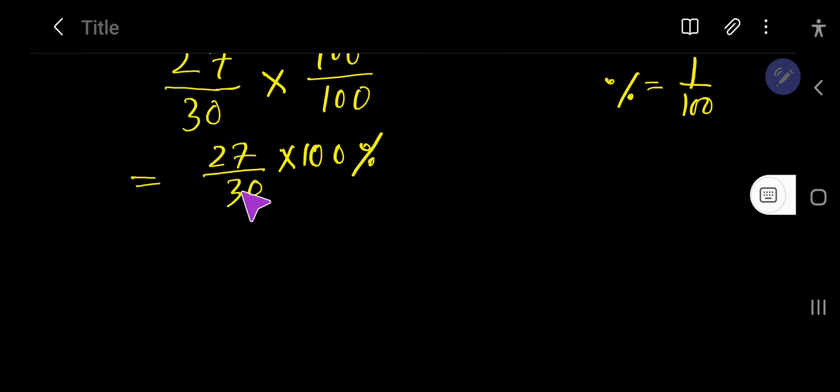Now you need to calculate this. This 0, this 0 cancel each other. So we are getting here 27 divided by 3 times 10.